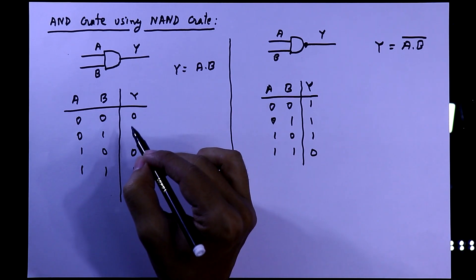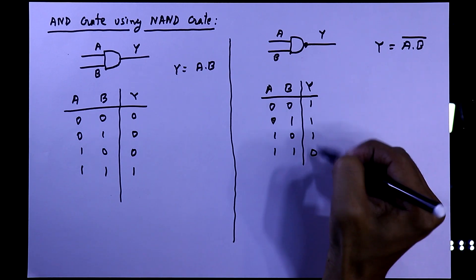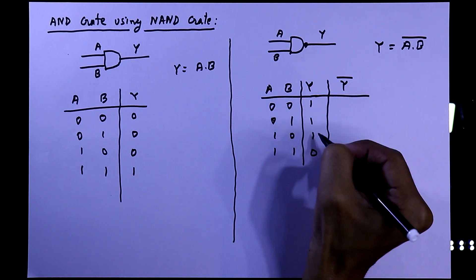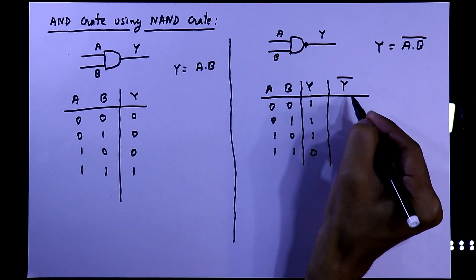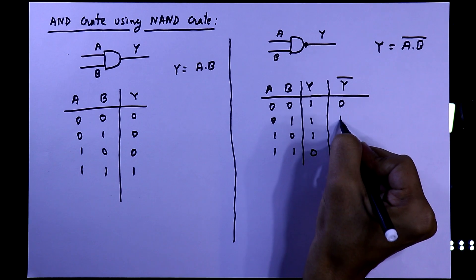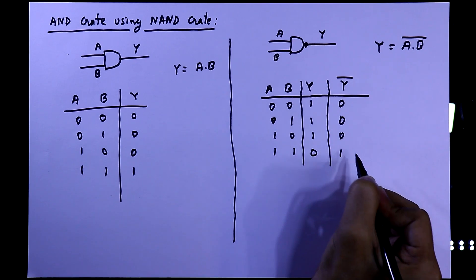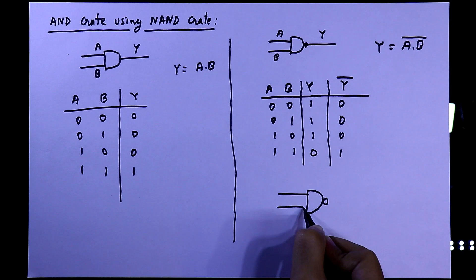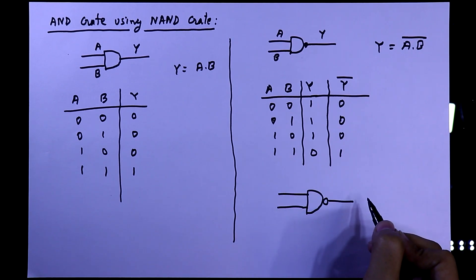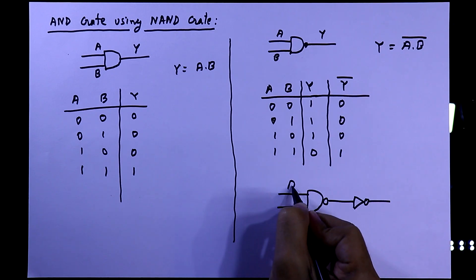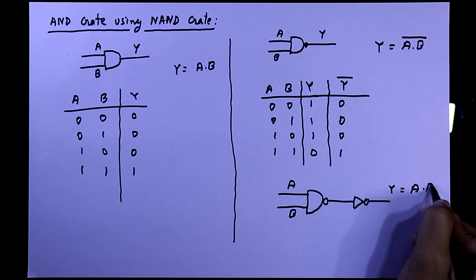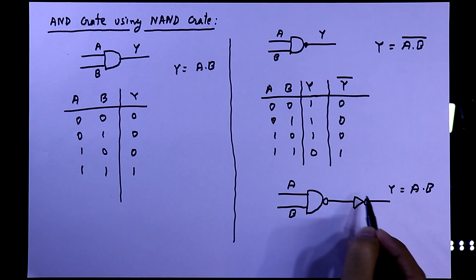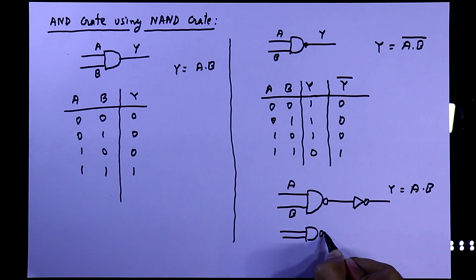So to get the AND gate output, we have to add one NOT gate with the NAND gate. If we add another NOT gate, we will have Ȳ equal to 1, 0, 1, 0, 0, 1. So this is the output of NAND gate. Now to get AND gate output, we take the NAND gate and add one NOT gate with it, so we will have A·B. But we have to use only NAND gates, so we have to use NAND gate instead of NOT gate, and our final circuit will be this.